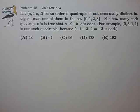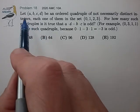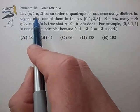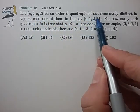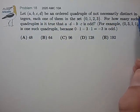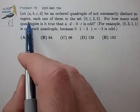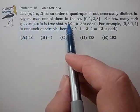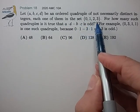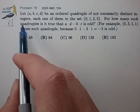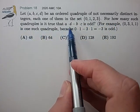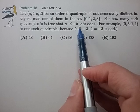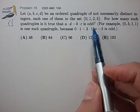This is problem 18 from the 2020 AMC 10A. Let ABCD be an ordered tuple of not necessarily distinct integers, each of them in the set of 0 to 3. How many such tuples is it true that AD minus BC is odd?